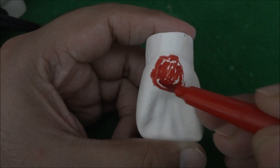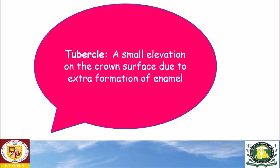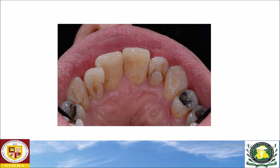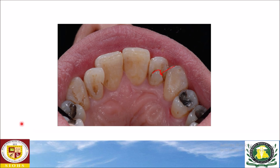The cingulum is present on all the anterior teeth. A tubercle is a small elevation on the crown surface due to the extra formation of enamel. Here in this clinical picture you can see a tubercle on the maxillary lateral incisor — this is a tubercle.